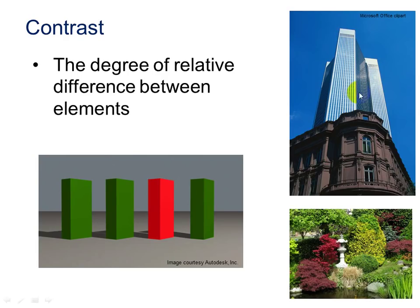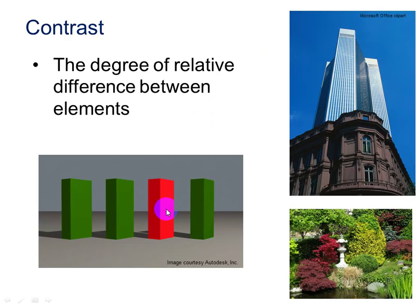Another principle is contrast — referring to the degree of relative difference between the elements. Here we can see a contrast between these four pillars: three of them are green and one is red — a contrast in color. This image over here contrasts in value, texture, size, and shape. We can see a lighter color versus a darker color creates contrast.